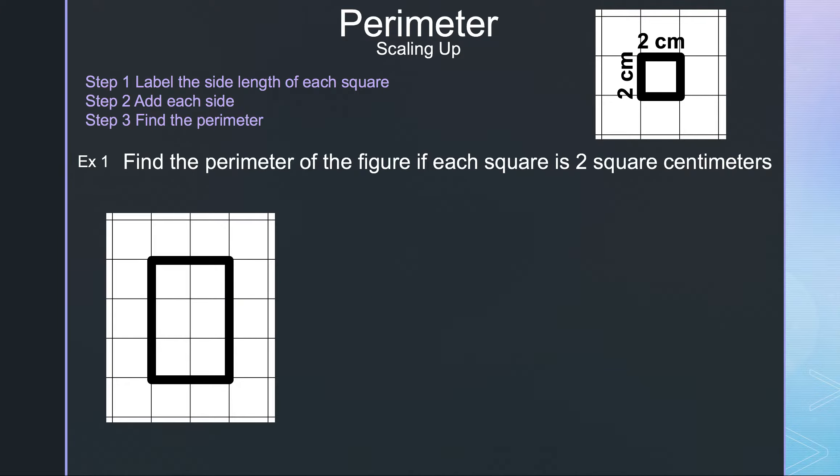Let's read the steps to find the perimeter of scaling up an image on a grid. Step 1: Label the side length of each square. Step 2: Add each side. Step 3: Find the perimeter.